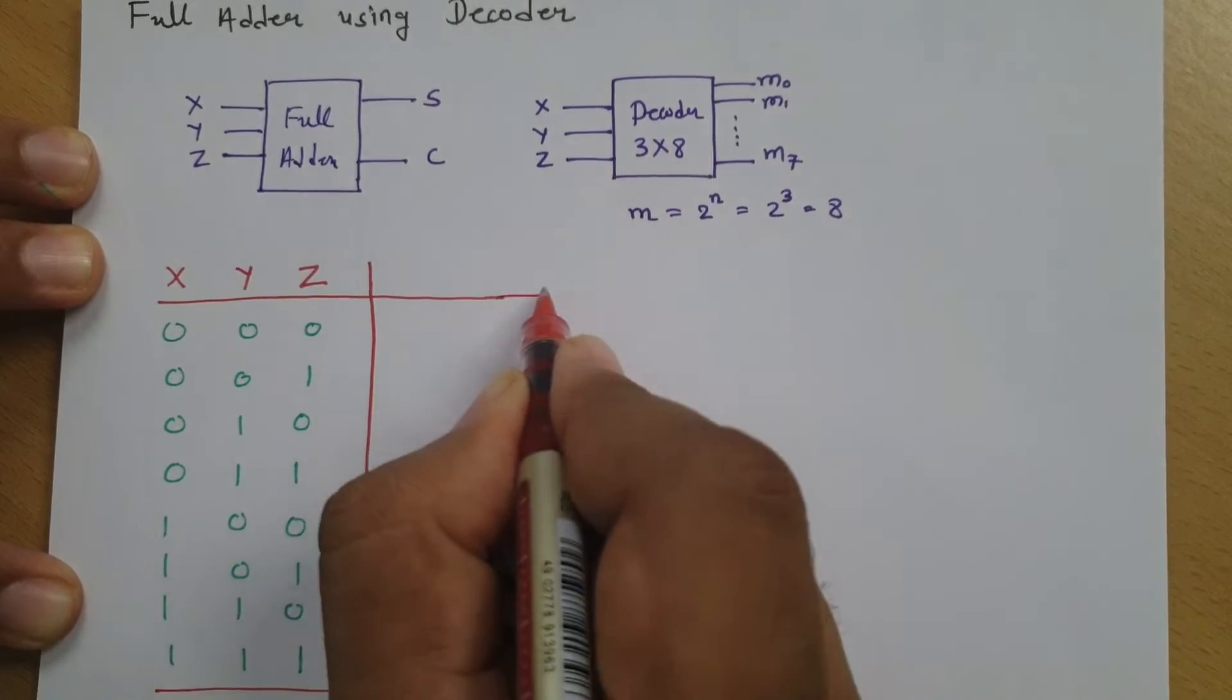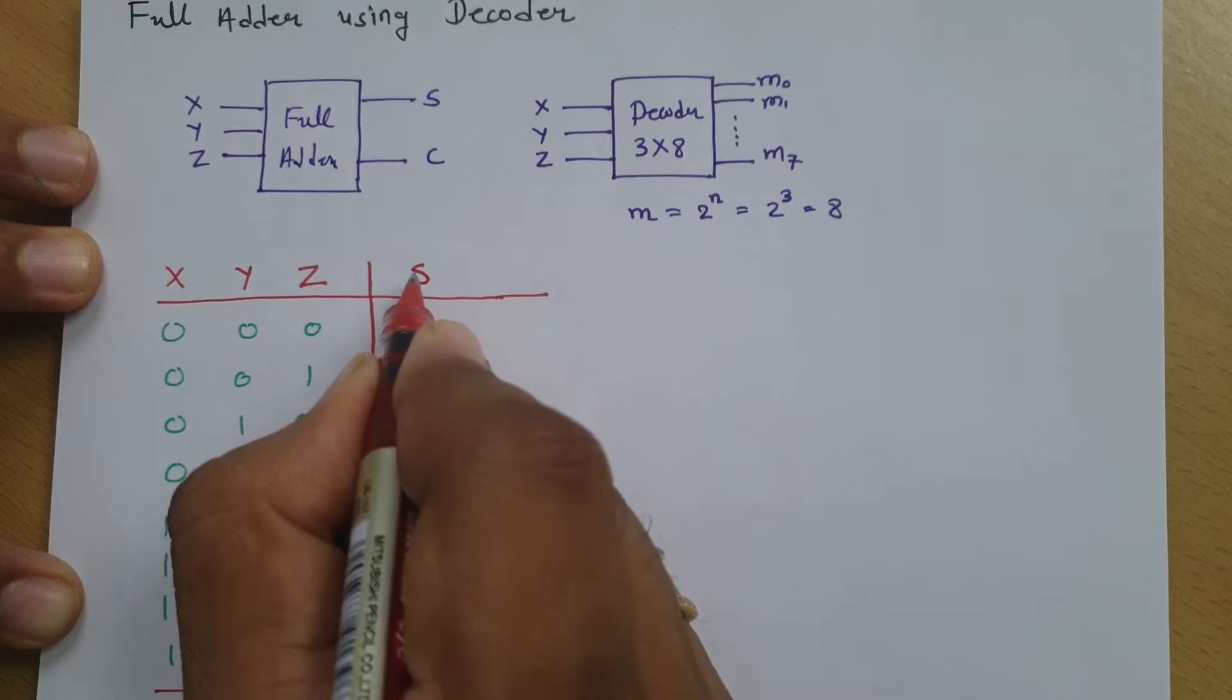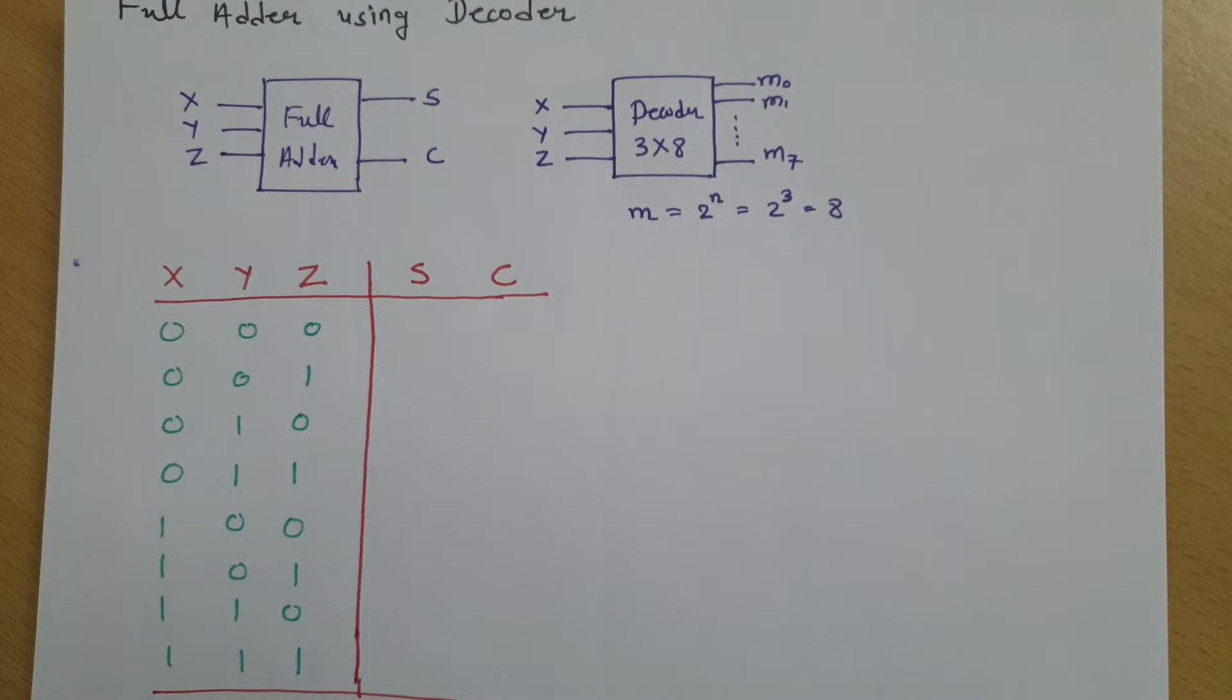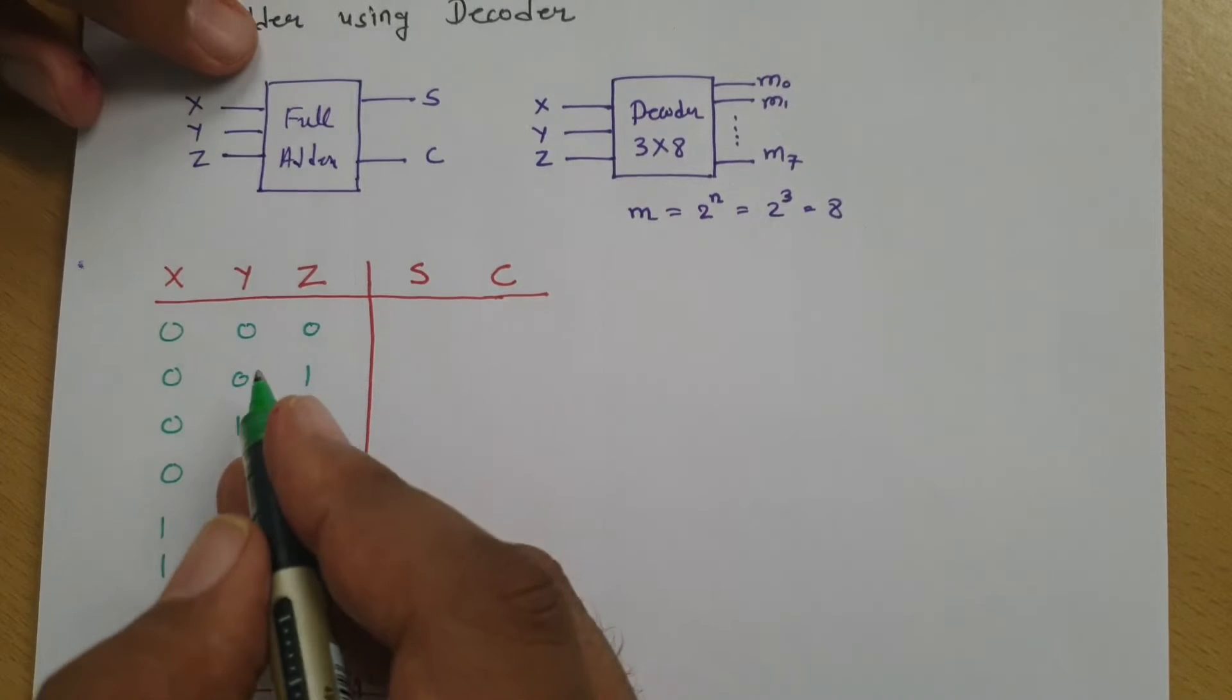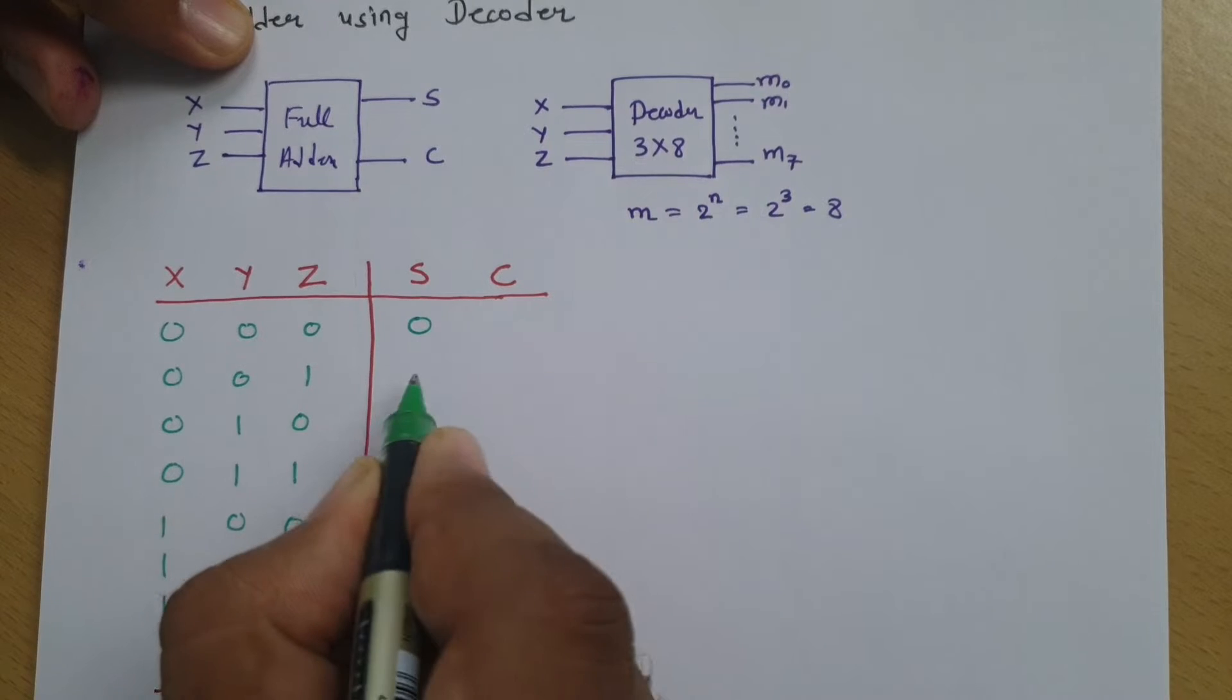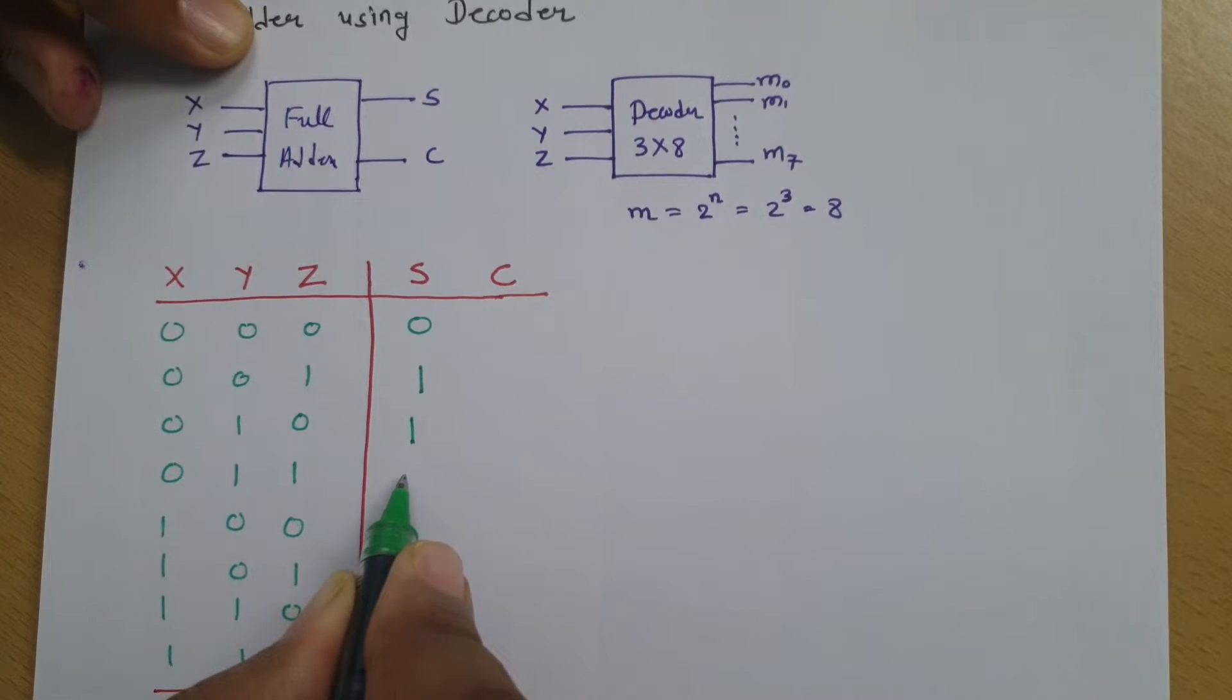And what I want to design? I want to design full adder. So I want to have this output that is sum and carry. Now if you observe sum for first input 0,0,0, that is 0. For 0,0,1, sum is 1. For 0,1,0, sum is 1. For 0,1,1, sum is 0 and carry is 1.